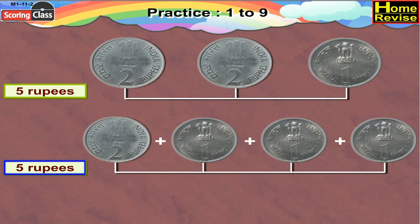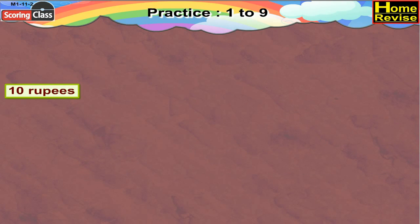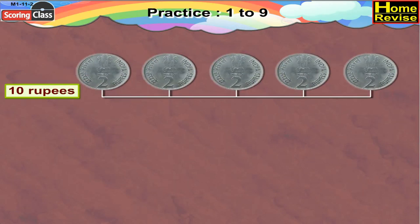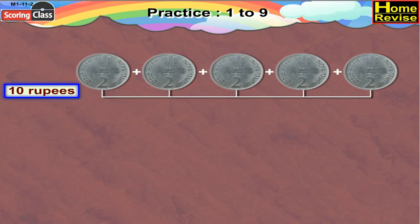Now we have to make 10 Rupees. For that we can take five 2-Rupee coins. That would be: 2 plus 2 is 4 Rupees, plus 2 is 6 Rupees, plus 2 is 8 Rupees, and 8 Rupees plus 2 Rupees makes it 10 Rupees.